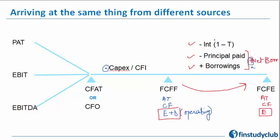An important point: why do we apply (1 − T) to interest but not to borrowings? Because interest is an expense and a tax-deductible expense, so only the expense portion is made after-tax. Borrowings, on the other hand, are the liability portion — they don't go to the income statement. When you borrow something, there is no tax shield on that. Tax applies only to income and expenses, not to assets or liabilities.